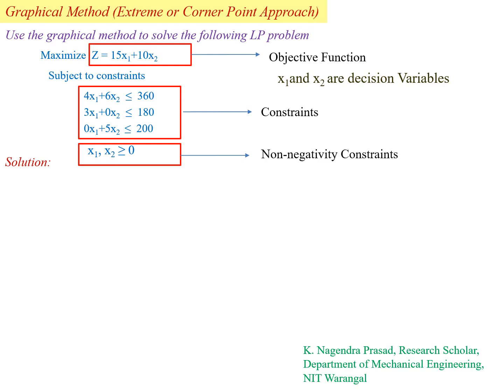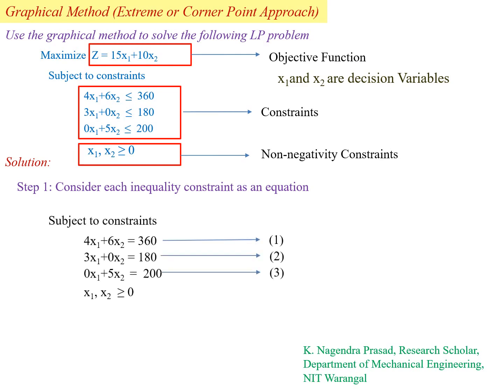Step one: consider each inequality constraint as an equation. Three constraints are given, all having the less than or equal to inequality. Replace the inequality with equality. The constraints become: 4x1 plus 6x2 equal to 360.